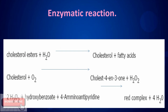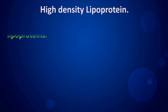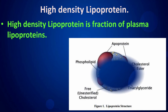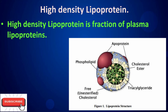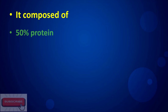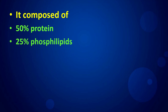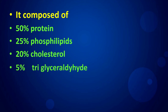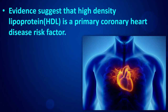The principle of the enzymatic reaction is applied for cholesterol measurement. High-density lipoprotein is a fraction of plasma lipoproteins. It is composed of 50% protein, 25% phospholipids, 20% cholesterol, and 5% triglyceride. Evidence suggests that HDL is a primary coronary heart disease risk factor.